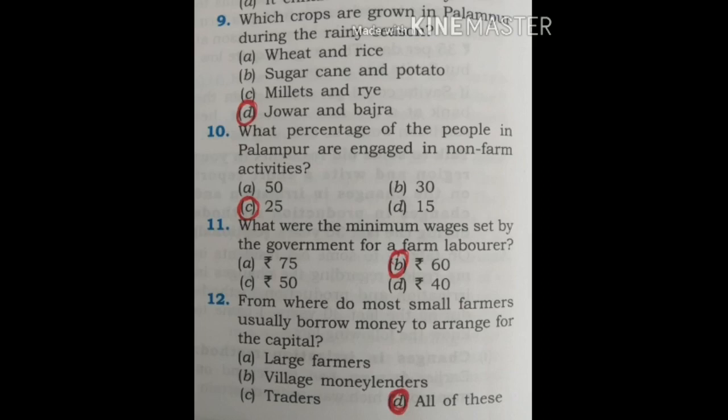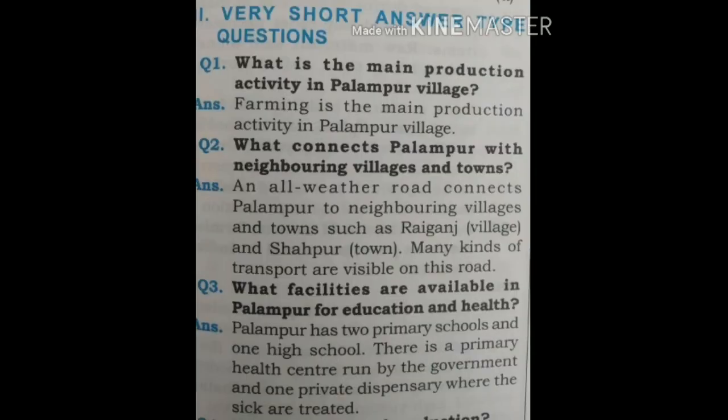Question 12: From where do most small farmers usually borrow money to arrange for the capital? The options are: large farmers, village money lenders, traders, and all of these. The correct option is D — All of these.